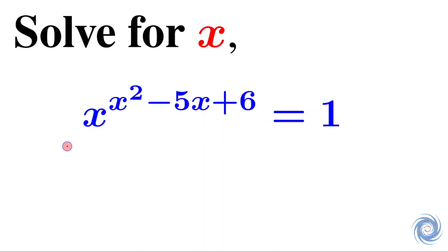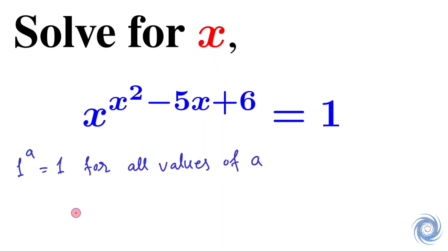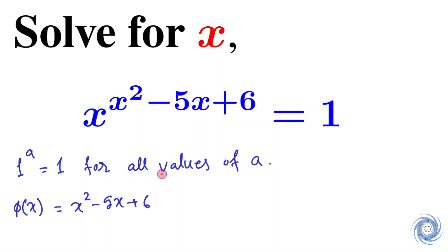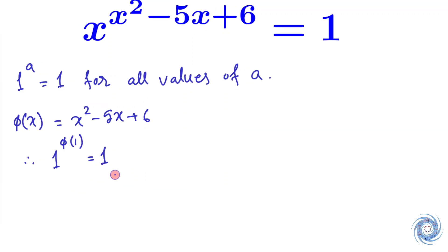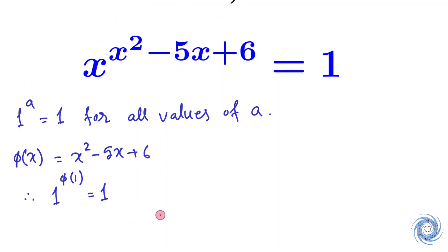First we will use the following fact: 1 to the power a equals 1 for all values of a. So whatever the value of the exponent, we always have 1 to the power of that exponent equals 1. Therefore, x equals 1 is a solution of this equation.